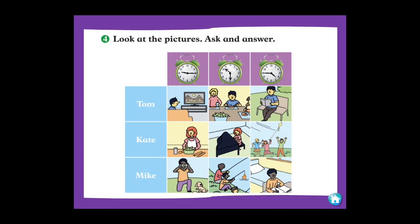Look at the picture — ask and answer. You have to ask the question and say the answer. The first one: Tom — what is he doing? He is watching TV. Cat — what is she doing? She is cooking food. Mike — what is he doing? He is taking photos. In the same way, you have to do column two and column three.